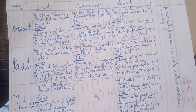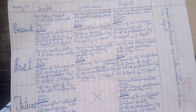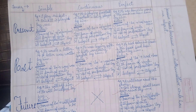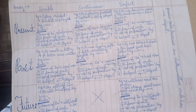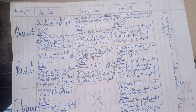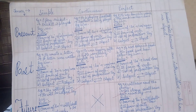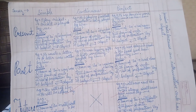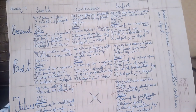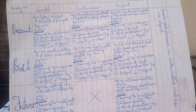Good morning dear students. In the previous class we began with the topic of voice — active and passive voice — and we were thorough with the introduction of that topic. We gathered why we need voice in grammar, how we change it from active to passive, about the subject and object being at each other's place. Now in this video we will be taking up the table that you can see on your screen.